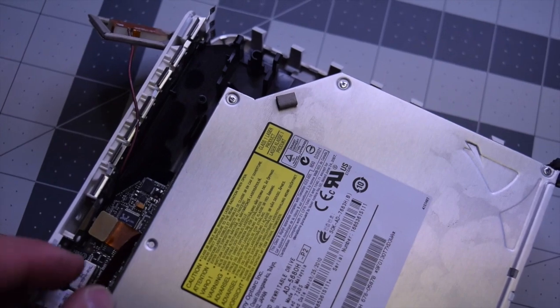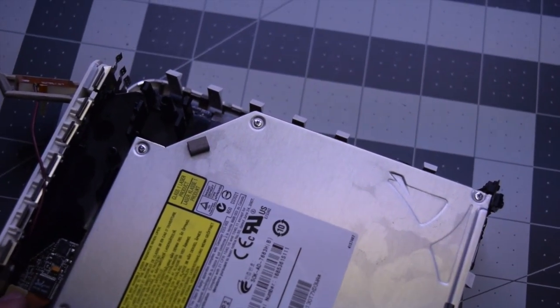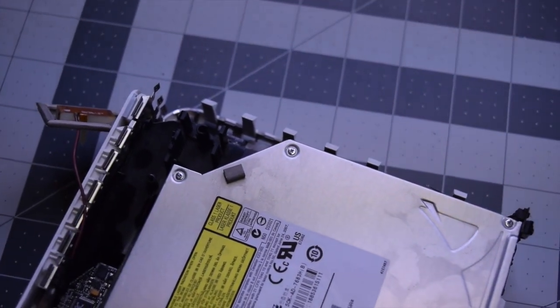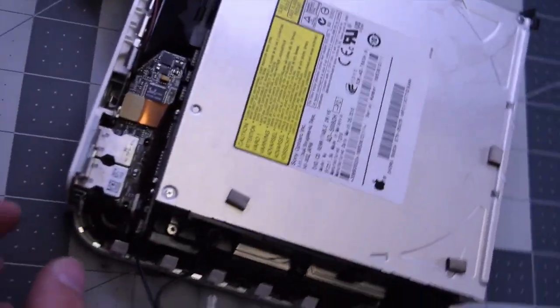Go ahead and plug back in that ribbon cable that connects the I.O. bridge to the DVD drive. It's plugged into two places. Go ahead and secure that.